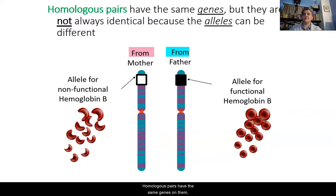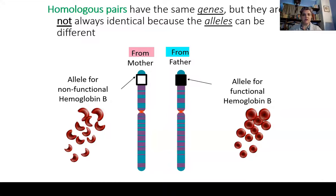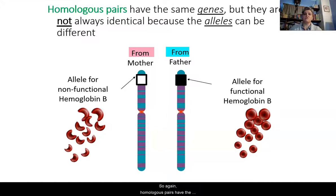Homologous pairs have the same genes on them, but they're not always identical because these are alleles — the alleles can be different. For example, the chromosome from a mother may have the allele for non-functional hemoglobin B, which is the sickle cell disease. From the father, the allele may be for functional hemoglobin, so you would see round, healthy red blood cells. So again, homologous pairs have the same genes, but the genes aren't always the same because we have gene versions, or alleles.